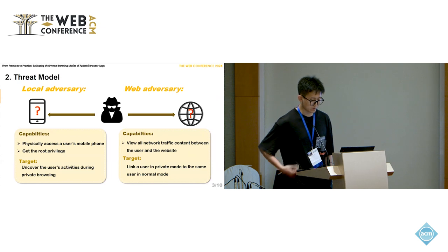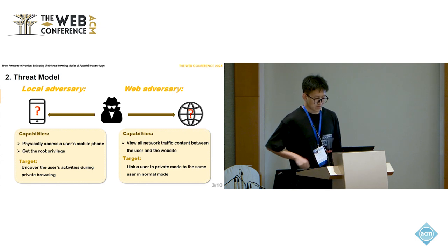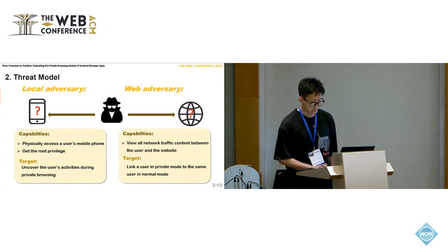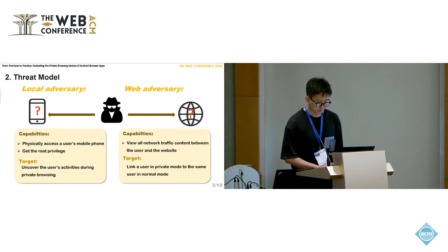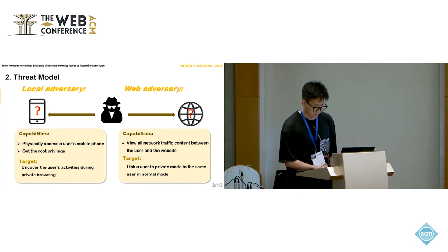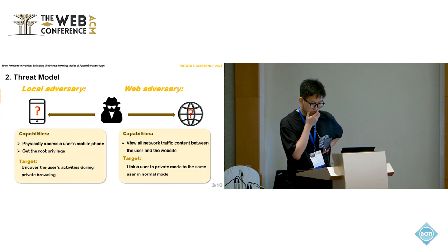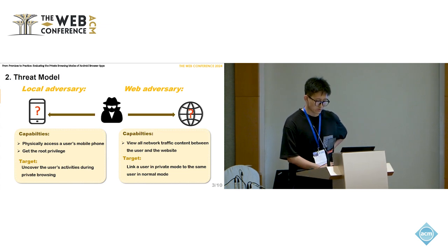To evaluate mobile private browsing, we first build a threat model with a local adversary and a web adversary. A local adversary can physically access a user's mobile phone — we consider this a powerful adversary from the perspective of digital forensics. A local adversary can obtain root privilege through popular tools and then view data generated by all apps, aiming to uncover user activities during private browsing. A web adversary can control websites the user visits and view all network traffic, with the goal of linking a user in private mode to the same user in normal mode.